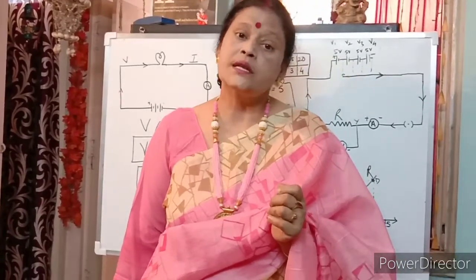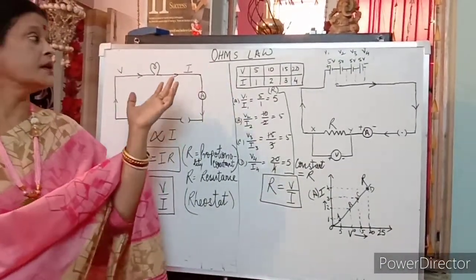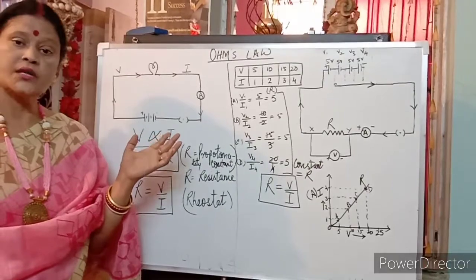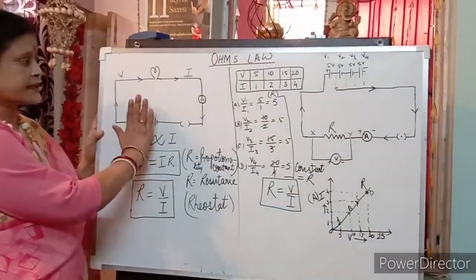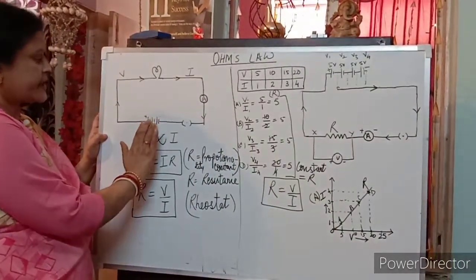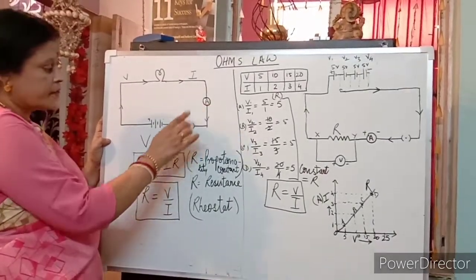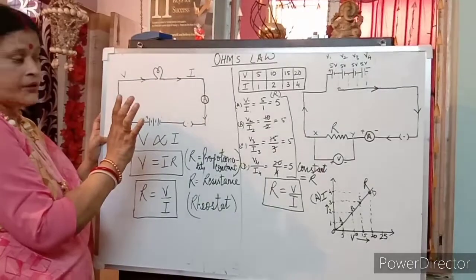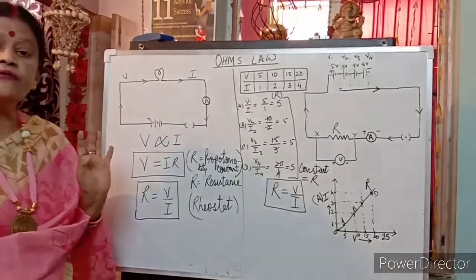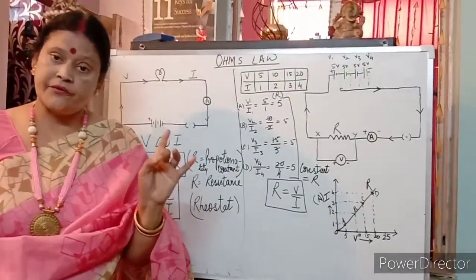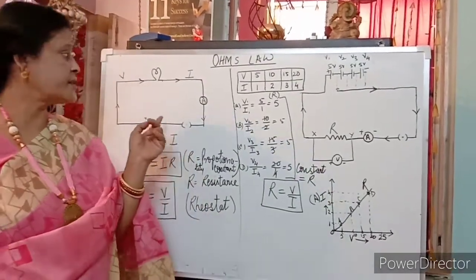What is Ohm's Law? As the name suggests, this law was named after the scientist George Simon Ohm. Now, suppose this is the circuit — this is the battery, this is the ammeter to measure the current, this is the switch, and this is the bulb. Current is the flow of charge in unit time, and potential difference is the work done to carry the charge.